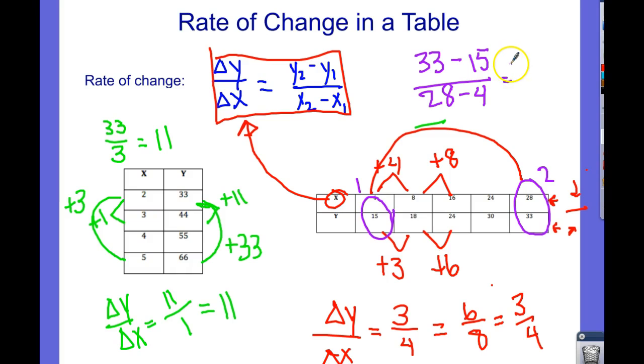Okay, 33 minus 15 is 18. And 28 minus 4 is 24. And this is each divisible by 6. And that's 3 fourths. So you could have gotten it either way. Pick any interval you want. You can use the formula if you want. Or you can just use this little kind of jump strategy that we're using here.